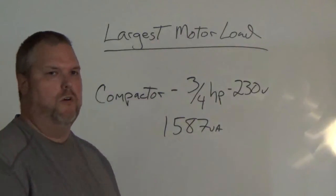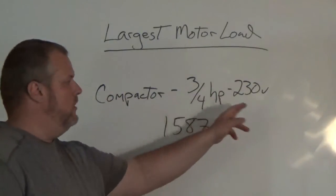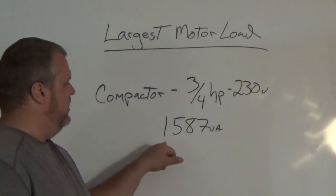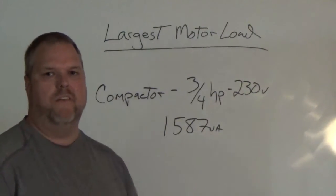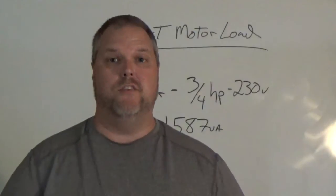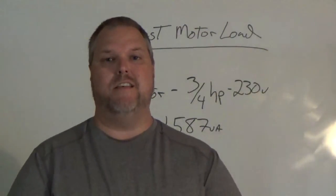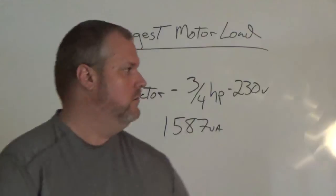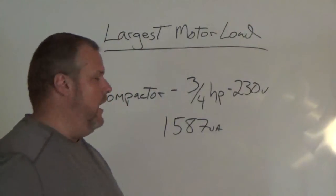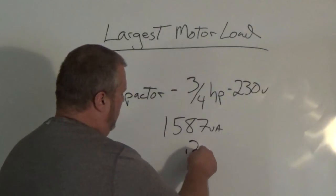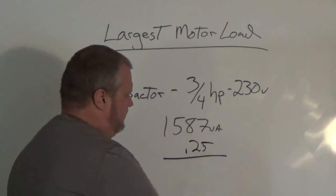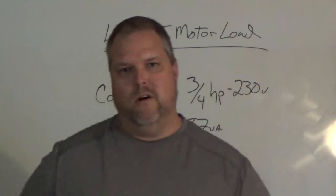In our fixed appliances, our compactor was our largest motor. It was a three-quarter horsepower at 230 volts, which gives us 1587 VA. What we have to do now is take our largest load, the compactor load, and multiply it by 0.25.